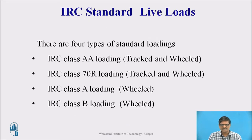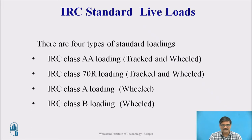These are the standard live loads recommended by IRC. There are basically four types of standard loadings. The first is IRC class AA loading, which has both a tracked and a wheeled system. The second is IRC class 70R loading, which again has both tracked and wheeled systems. The third is class A loading and the fourth is class B loading. Class A and class B loading are only wheeled systems.